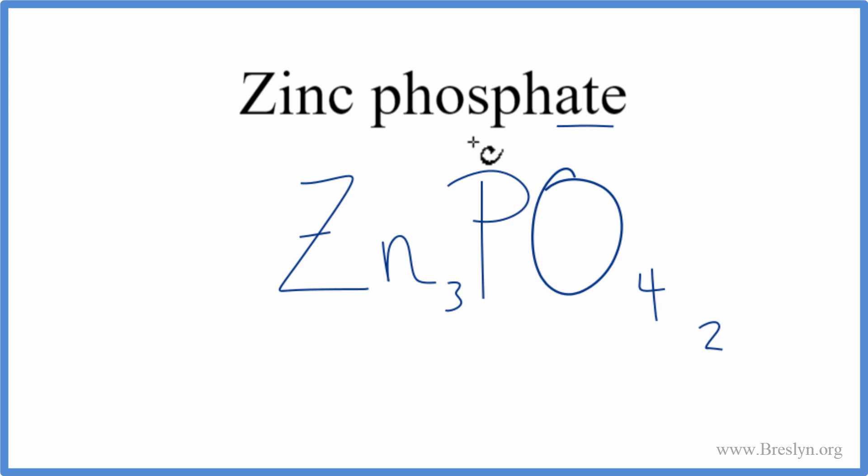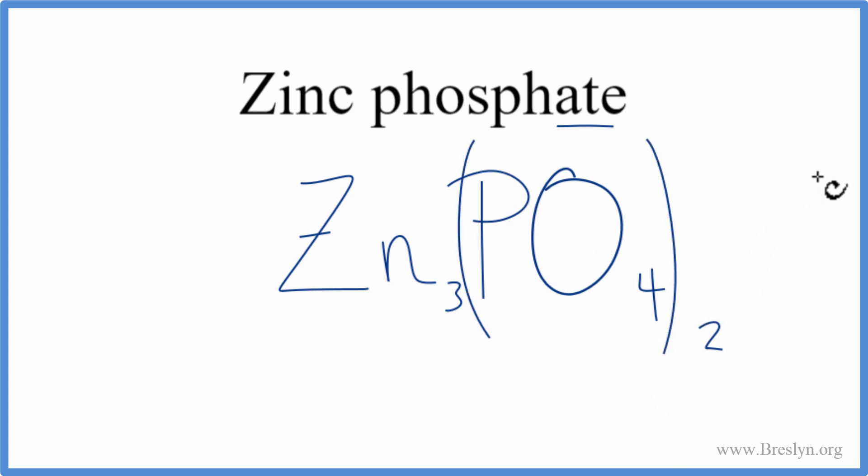And we have two of them. So we'll put parentheses around the phosphate. And this is the formula for zinc phosphate.